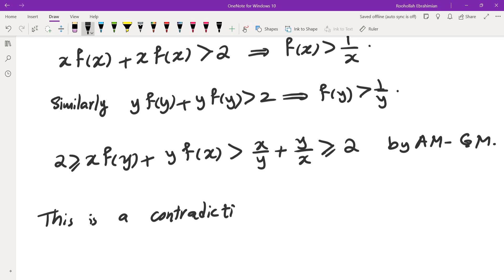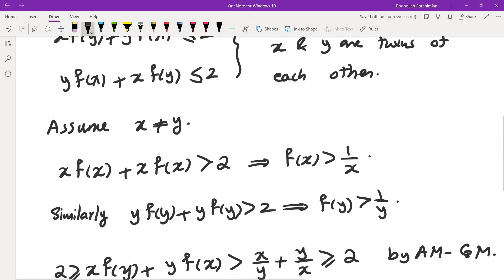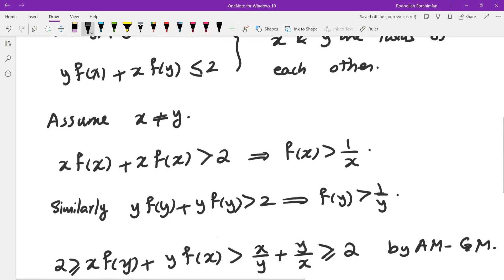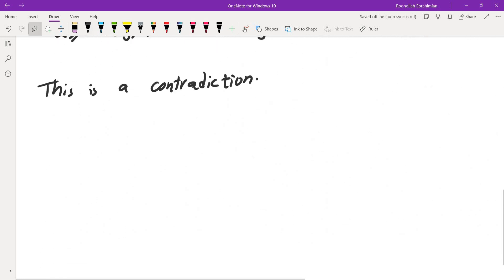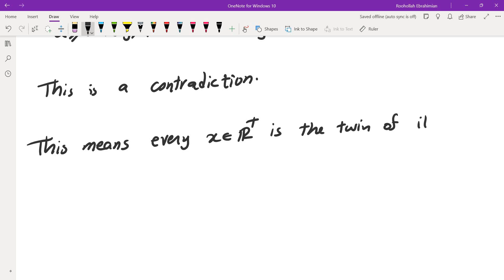Okay, so I did make some progress here. I haven't solved the problem yet, but I have made some seemingly at least significant progress. So this means every x in R plus is the twin of itself.